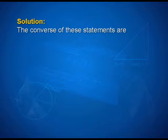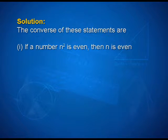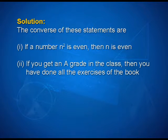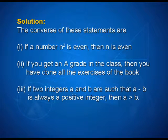Now let us look into the solution. The converses are: first, if a number n squared is even, then n is even. Second, if you get an A grade in the class, then you have done all the exercises of the book. Third, if two integers a and b are such that a minus b is always a positive integer, then a is greater than b.